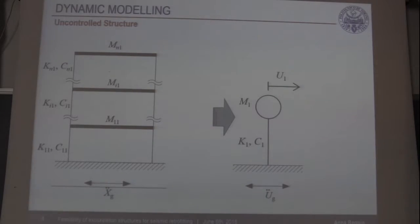Starting from the details of the dynamic modeling, we consider a frame structure subjected to a base motion that represents the earthquake load. This initial configuration can be defined as uncontrolled because the dynamic response of the structure is not controlled by a retrofitting system. The dynamic response can be represented with sufficient accuracy by a reduced order model, a single degree of freedom model, that represents the first modal response of the building.